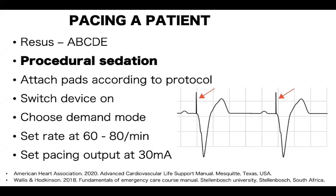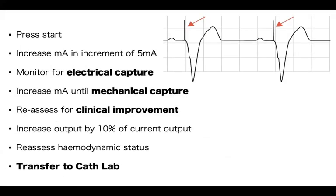In demand mode, select the rate for the patient and then proceed to the patient output. You can start from zero and increase by five milliamps, or start at 30 milliamps — no electrical capture has ever occurred at less than 30 milliamps. Once you start pacing, you will see the pacing spike originating and moving toward the QRS complex. When the QRS complex widens out and you see the heart rate matching your set rate — for example 60 — you will say there is electrical capture.